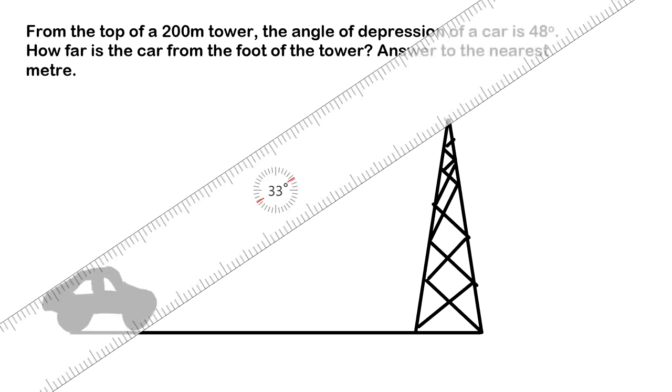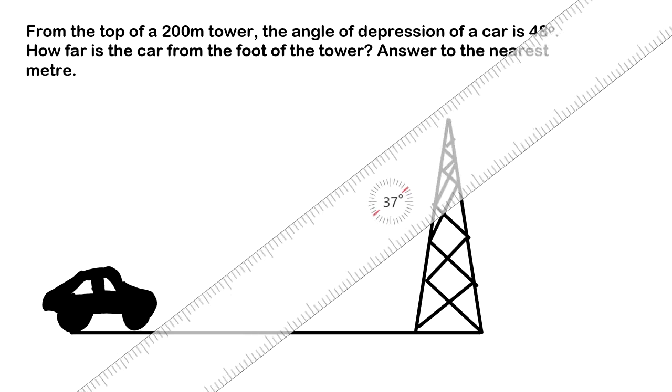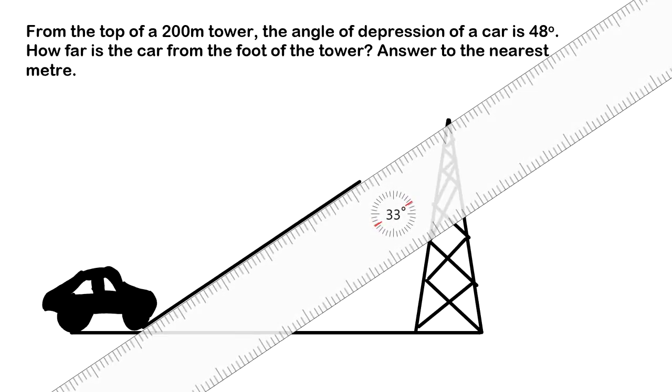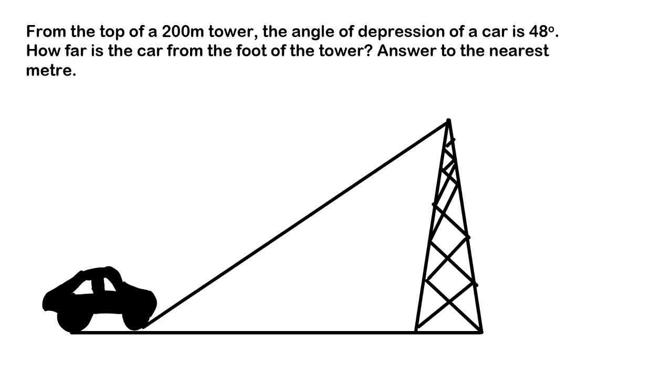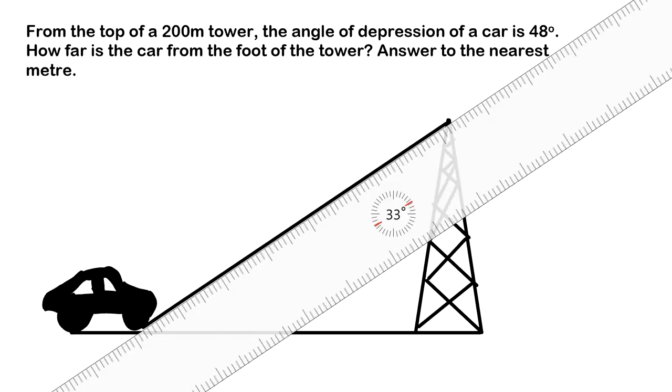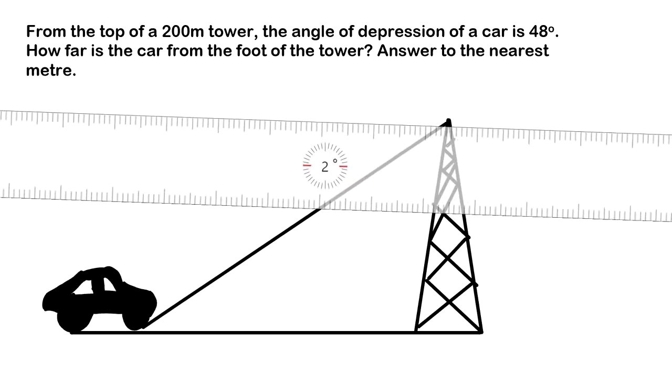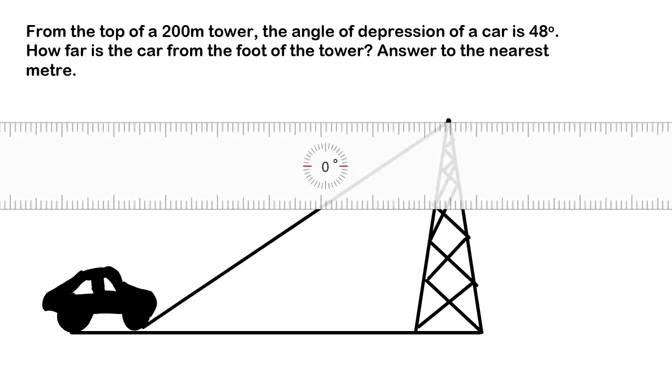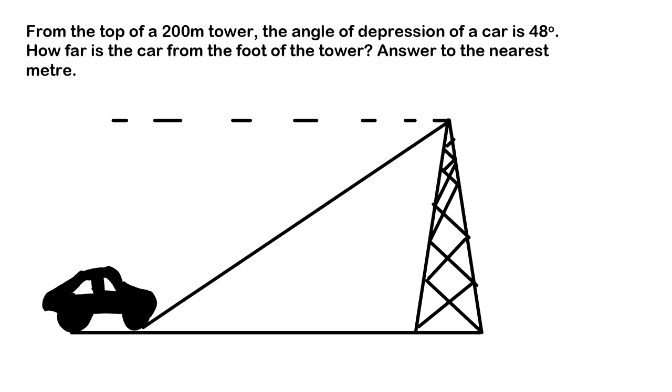We have an angle of depression, which is looking down from the top of the tower. What I'm going to do up here is make a dotted line going across, because our angle of depression is this angle here, 48. Now there's two ways you can use this. That 48 at this point is not very helpful. Before I begin, let's put our 200 meters here.